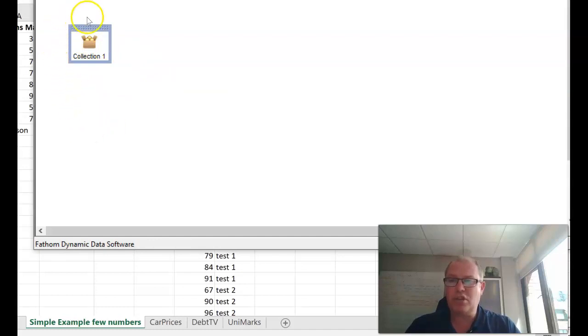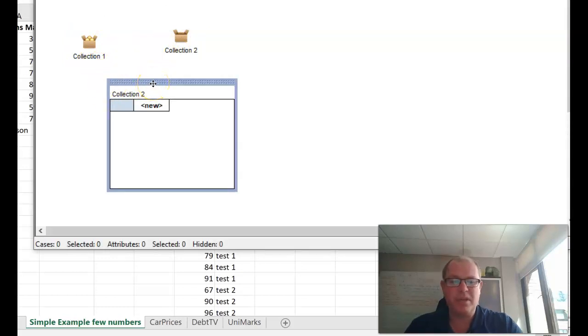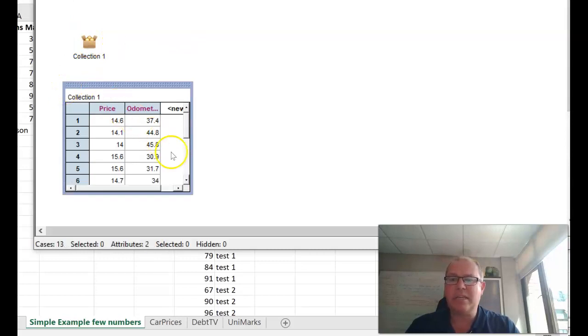You can see it's full of data. Make sure that this is highlighted because if you have another collection in Fathom that's highlighted and it's empty, when I pull down a table my table will be empty which is useless. You have to make sure your collection is highlighted blue, so left click on it, then pull down a table.